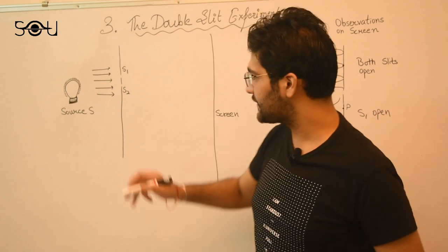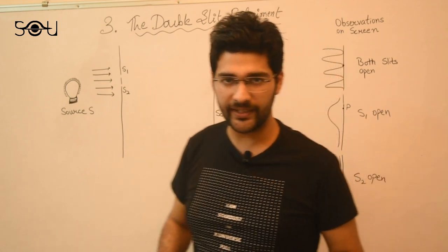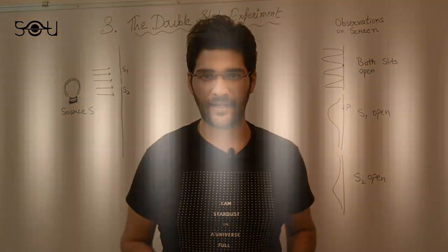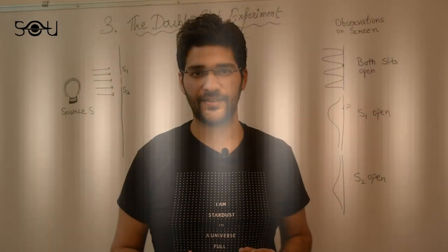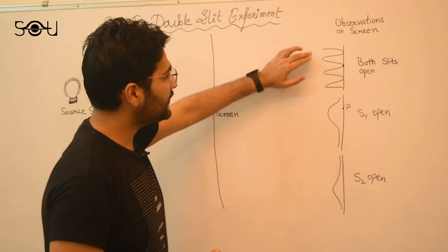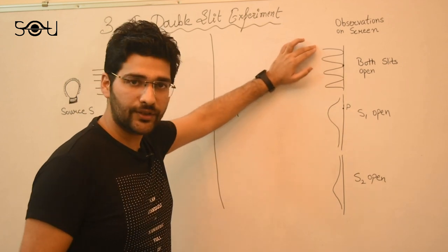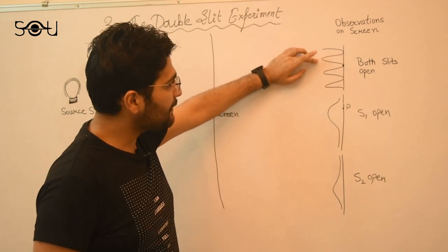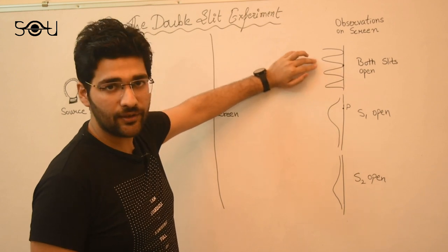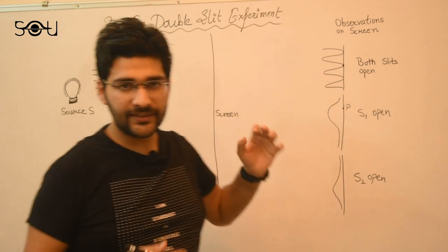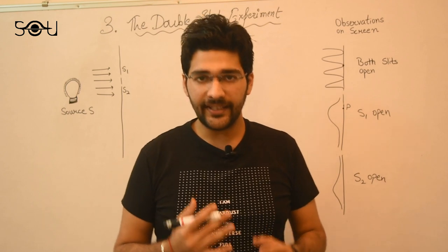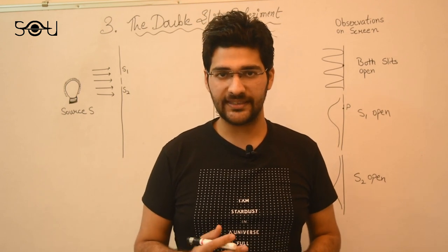When both the slits S1 and S2 are open on the screen, we observe a very strange pattern of light as shown in this image: alternate bright and dark fringes of light. This pattern is known as the interference pattern. I have also plotted the curve of intensity of the screen on the board. You see there is maxima and minima of intensity at regular intervals. So this pattern is known as the interference pattern we see when both the slits are open.